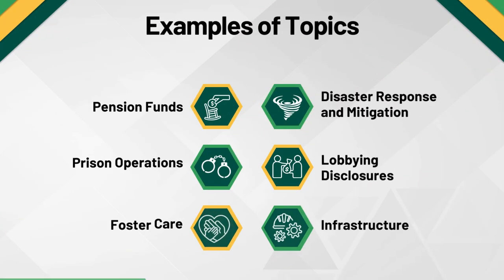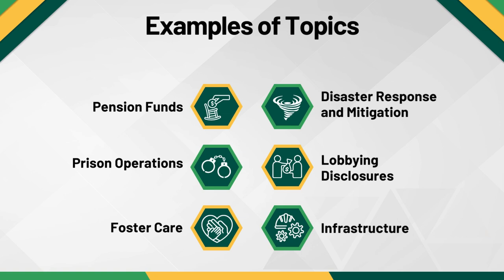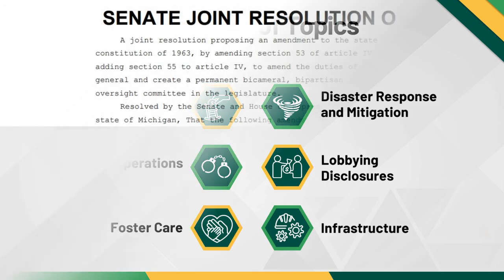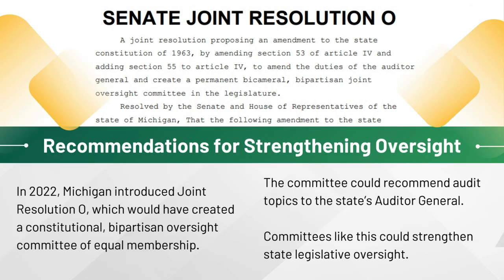Here are some examples of topics addressed through quality, bipartisan oversight in state legislatures across the country. These topics can be used as inspiration later on during the oversight planning exercise. In 2022, Michigan introduced Joint Resolution O, which, if passed, would have created a constitutional, bipartisan oversight committee of equal membership that could recommend audit topics to Michigan's Auditor General. Based on the research and observational evidence, we believe committees like this can strengthen state legislative oversight. A link to this resolution is available in the accompanying PDF.